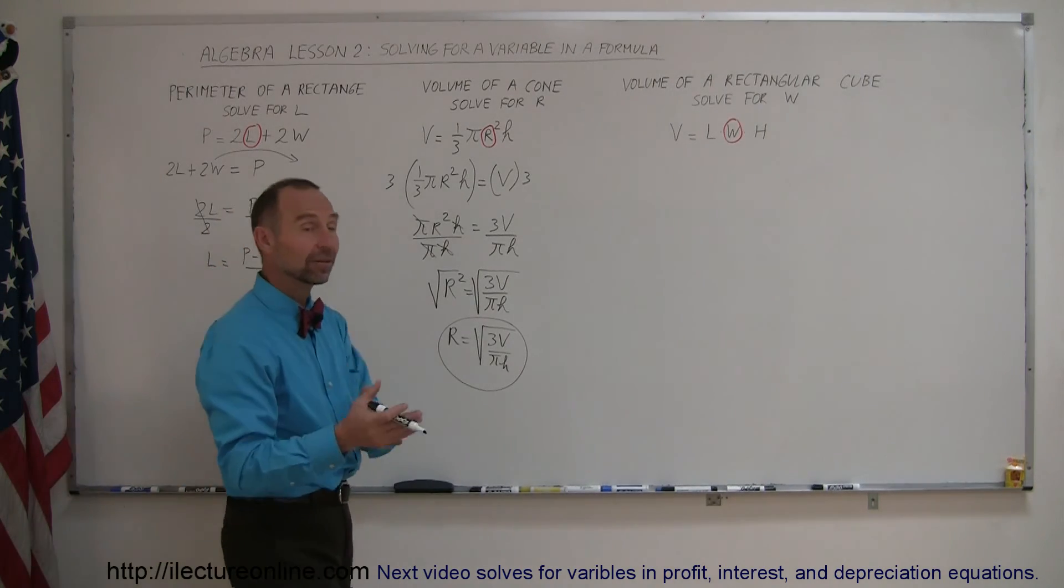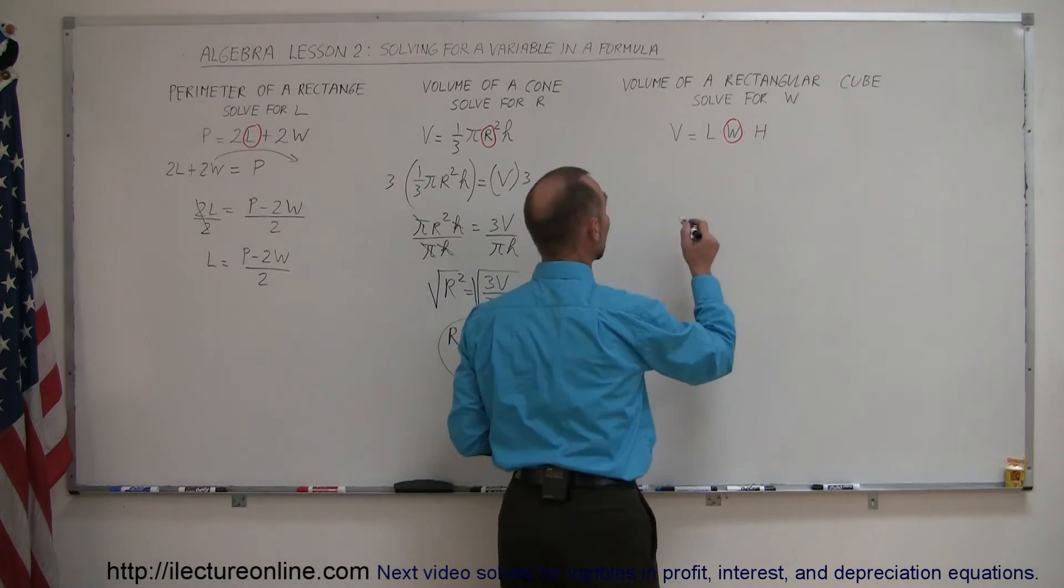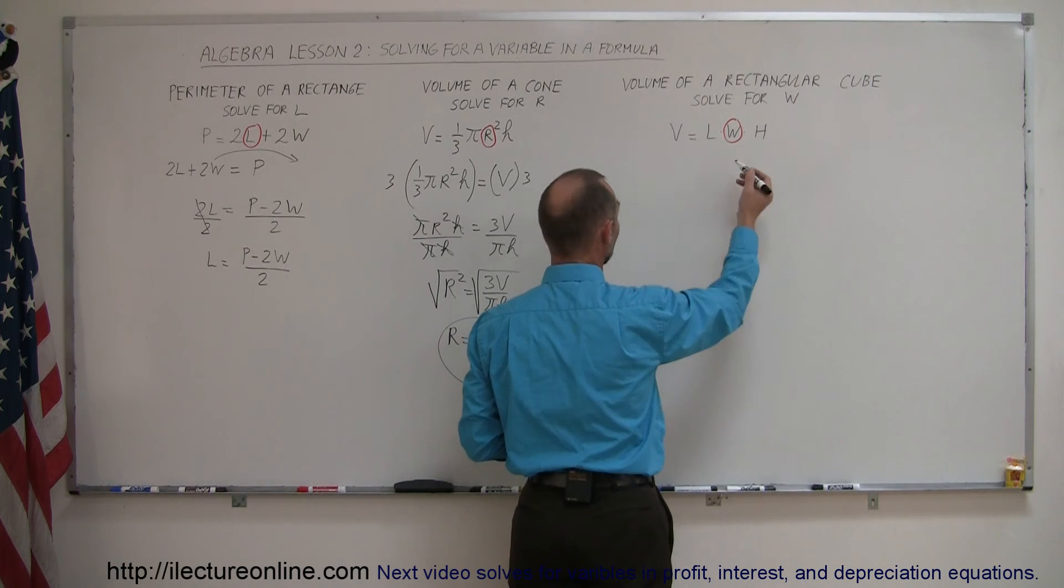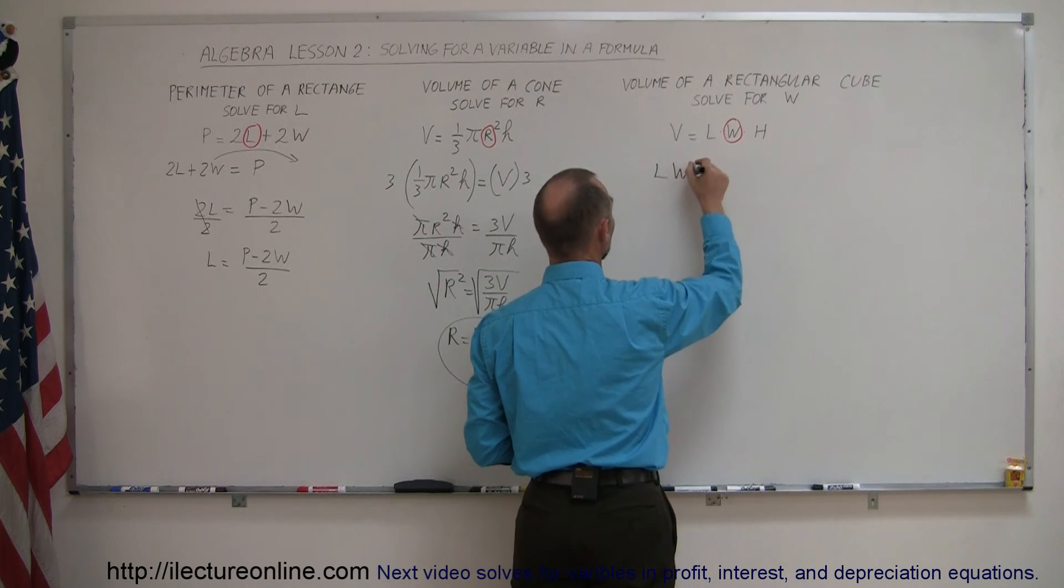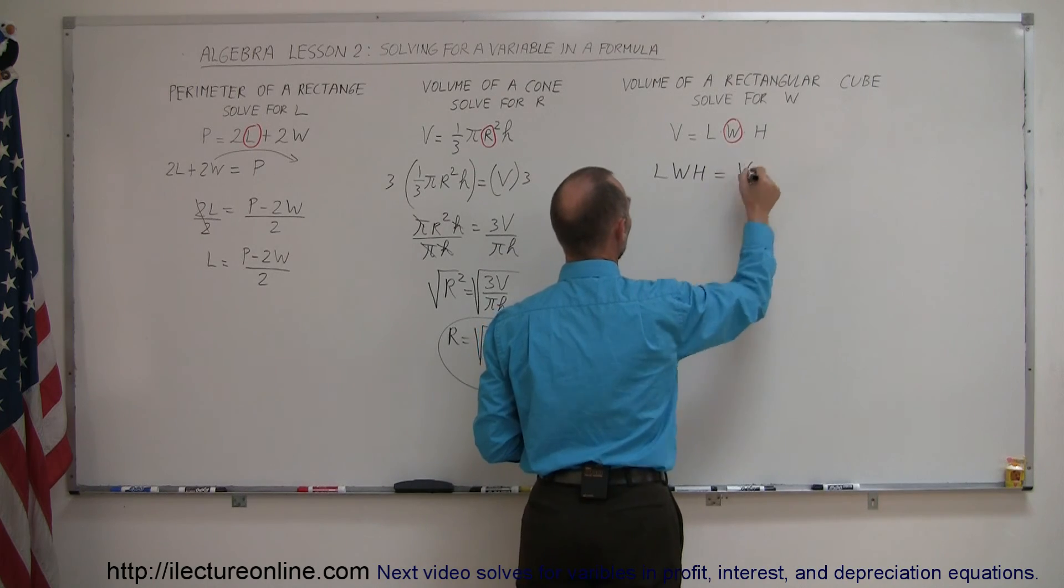So, again, since it's on the right side of the equation, we're going to move the equation around. We move the right side to the left, the left side to the right, so we have L times W times H equals volume.